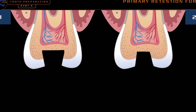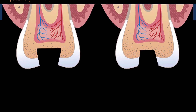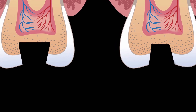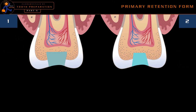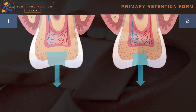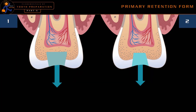Before going into the topic, look into these two pictures. The first preparation has a narrow occlusal area and a wider pulpal floor. In the second picture, we can see the opposite. We are filling these two cavity preparations with a restorative material, and the patient is chewing some sticky food. The sticky food will try to remove the restoration from the cavity preparation. So our cavity preparation should be in such a form and shape which will prevent the dislodgement of the restoration. This design characteristic is called primary retention form.